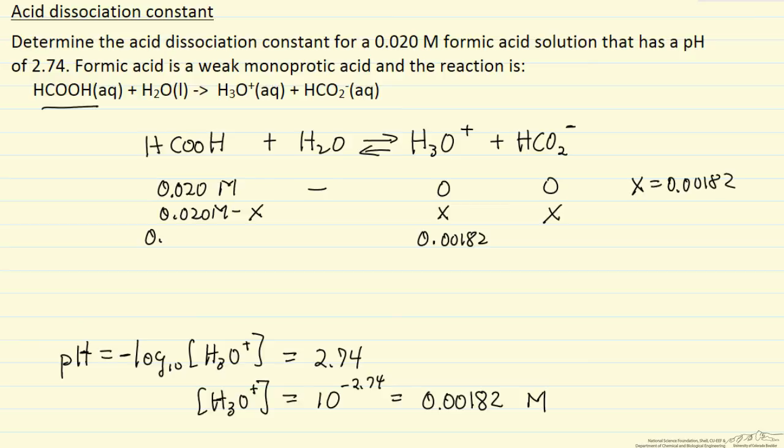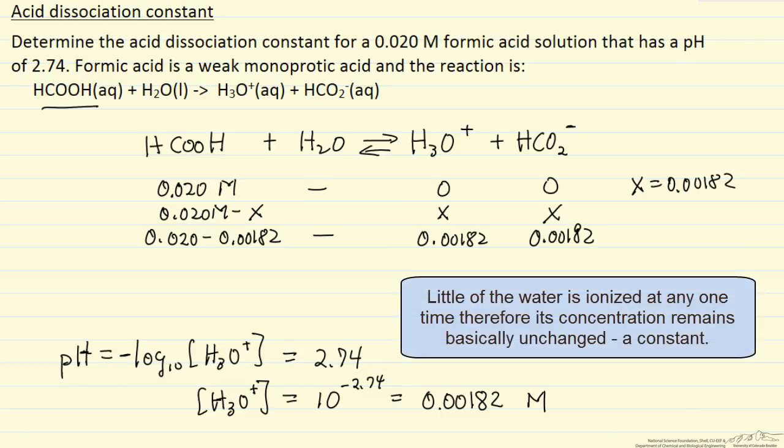That means the concentration of this formate ion is 0.00182, and then this concentration is 0.020 minus 0.00182. So we have all three concentrations, and again the water concentration essentially doesn't change, so it doesn't enter into this acid dissociation constant the way it's normally used.